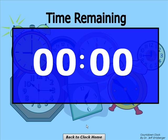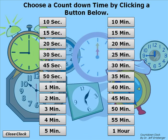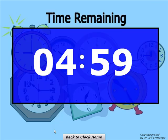I can then click to go back to the clock home, where I can choose another selection. This is great for a group — you can say you have five minutes to do this project, or I give you 10 minutes before we're going to quit and go do something else. This way there's no arguing over where the minute hand was on the clock. I'll click five minutes just to give you another example.